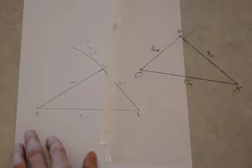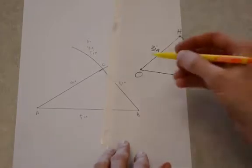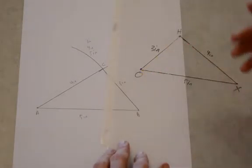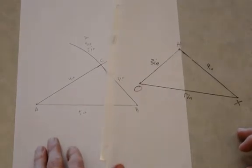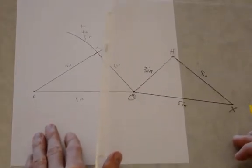So the first thing I'm going to do is I'm going to translate along vector OB to map point O to point B. Like that.